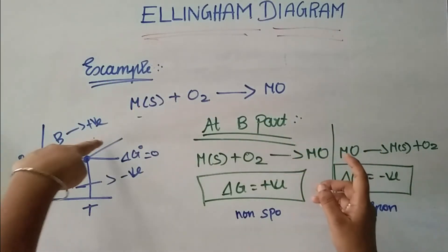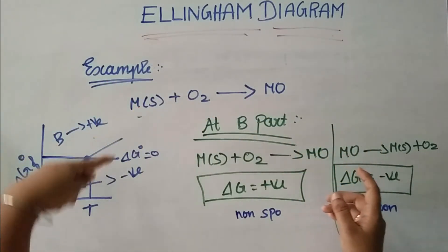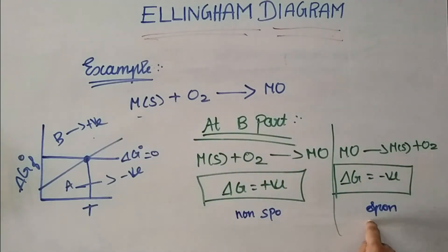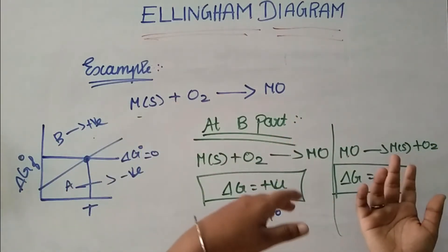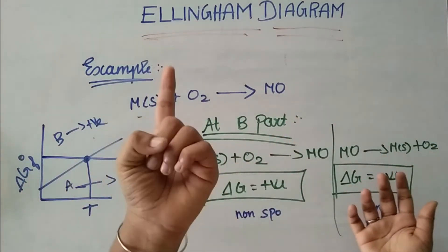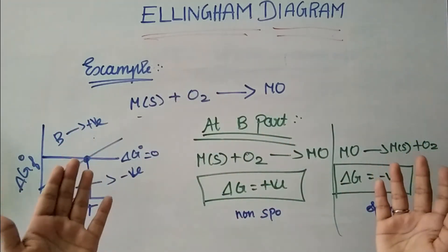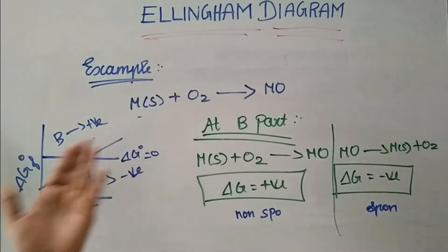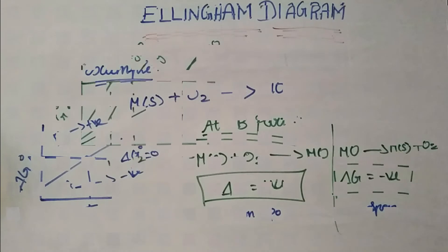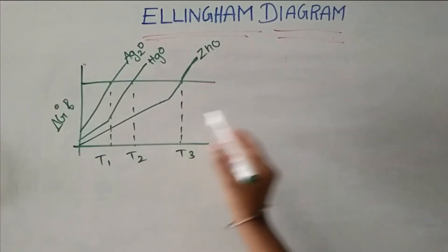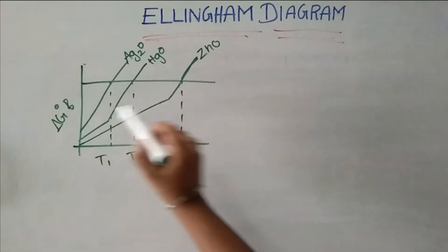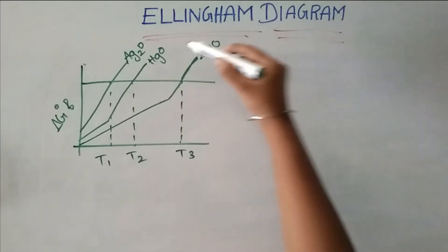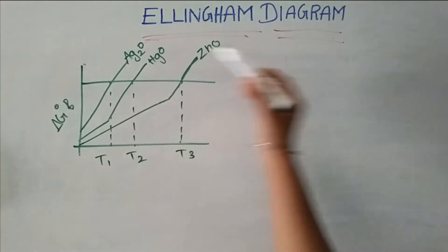In this graph, below a certain temperature (part A), the reverse reaction is spontaneous. Above that temperature, the direct reaction is spontaneous. There are three different temperatures — T1, T2, T3 — and three different metal oxides on the diagram.